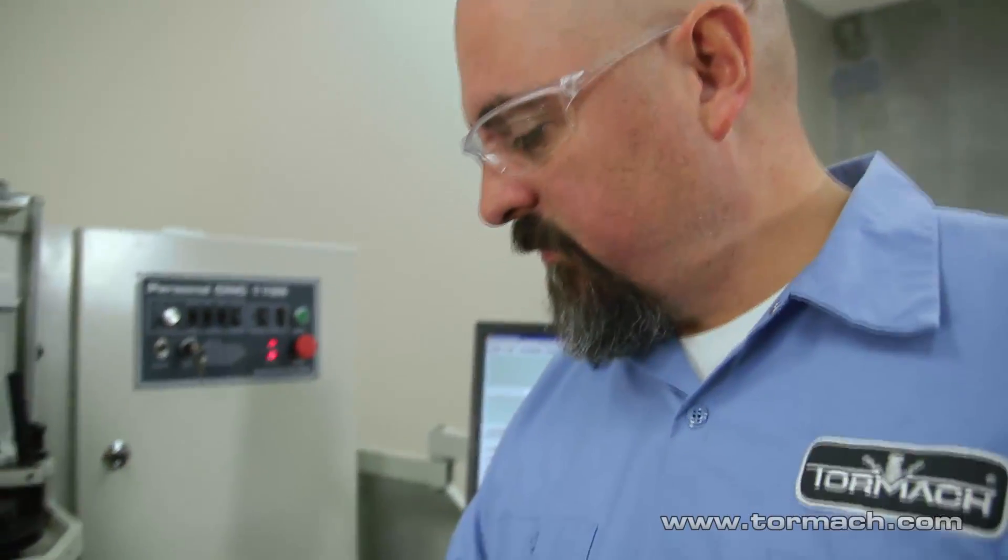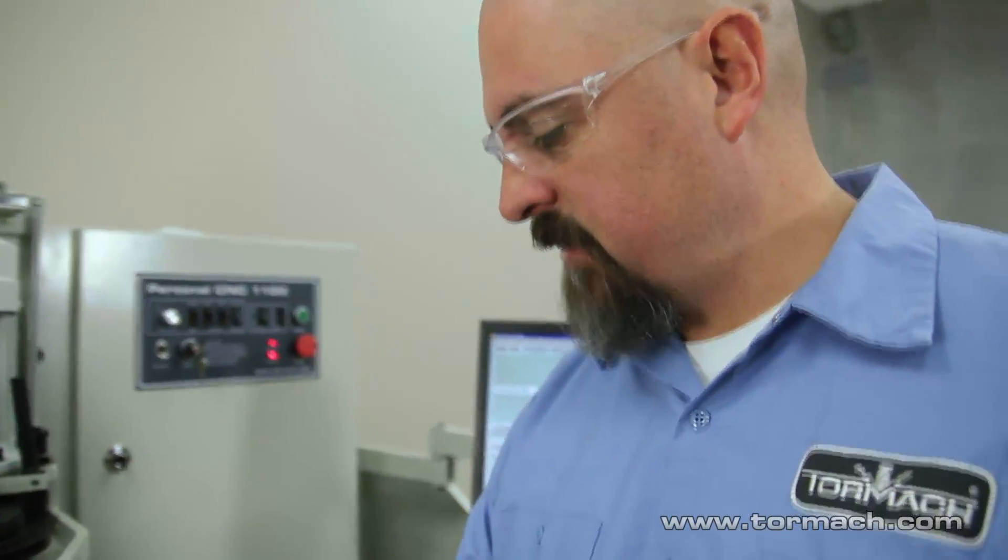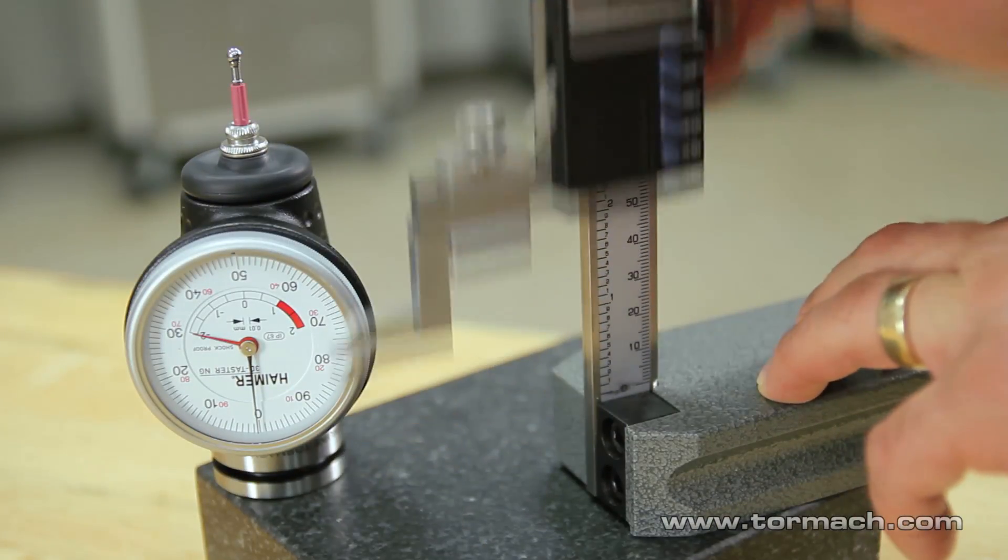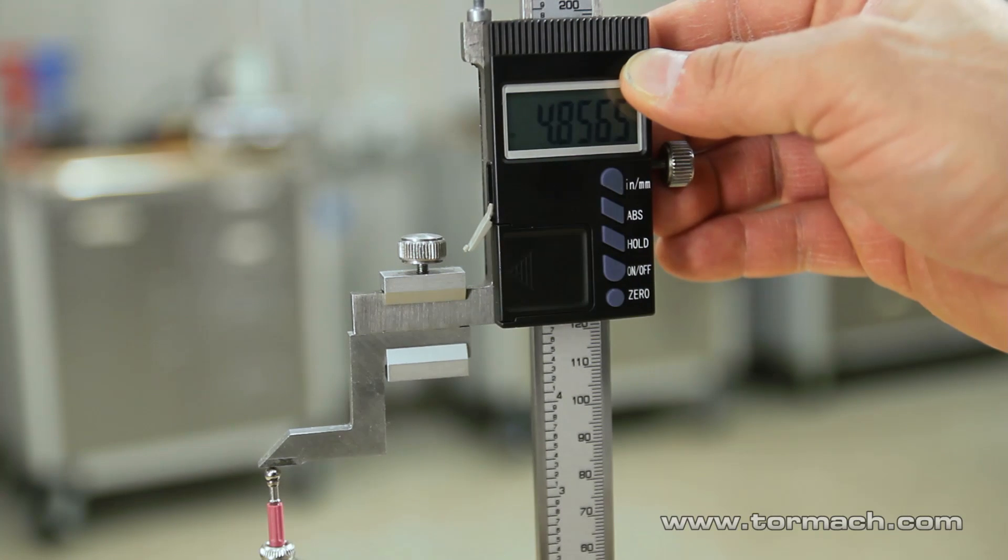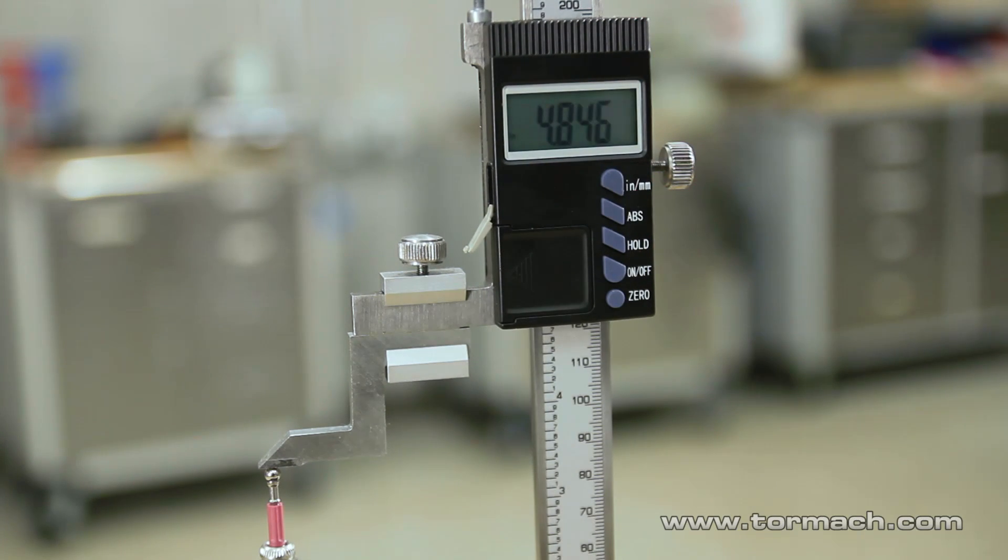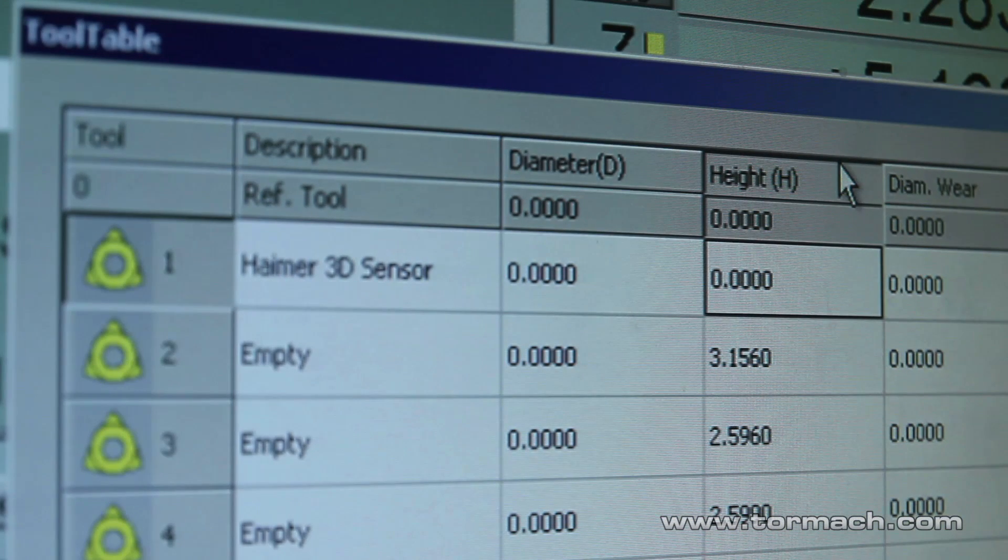The way to use this, the third axis function, the Z axis function with the Hymer, you have to have that number measured like you measure the rest of your tooling. And that number entered into your tool offset page and then that tool number called up.